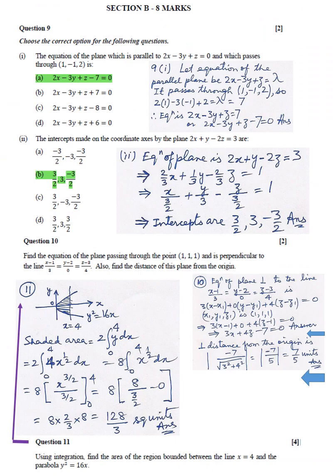Question 9 Part 1, Option A. Part 2, Option B. Question 10: Answer 3X plus 4Z minus 7 equal to 0 and 7 upon 5 units.